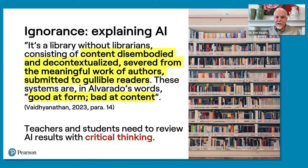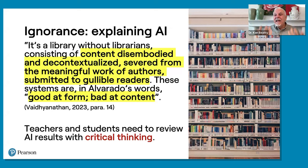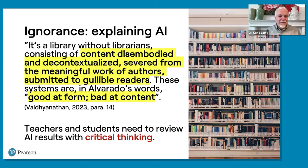One explanation is that AI is like a library without librarians — content which is disembodied and decontextualized, severed from the meaningful work of authors and submitted to gullible readers. These systems are good at form but bad at content. So they look like good information, but the content can be very poor. For example, someone recently asked the new Gemini AI from Google to produce pictures of soldiers from 1943 Germany. What it produced were Black and Chinese soldiers and women — completely incorrect historically. The AI didn't know that; it was trying to be multicultural but really didn't do the job. So we have to use critical thinking.